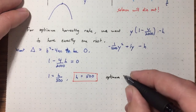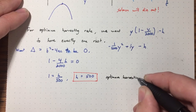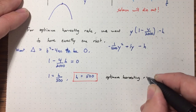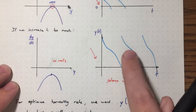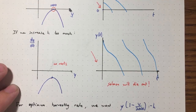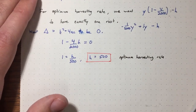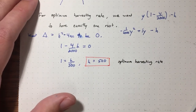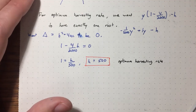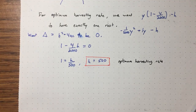If we harvest any more than 500 per year, we end up with no equilibrium solutions and the salmon will die out. But 500 is the absolute maximum rate at which the population can sustain itself. So that's it for this lecture.